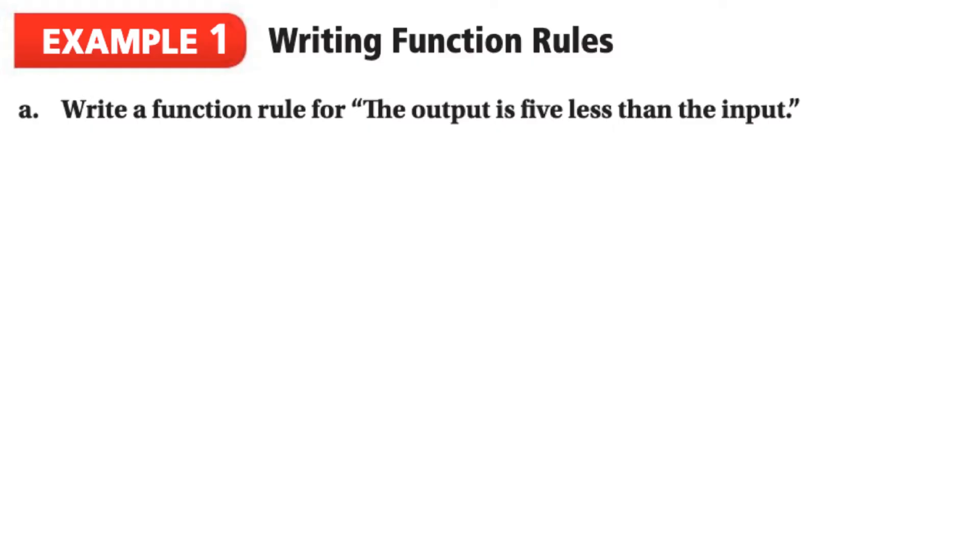In our first example we're going to take a look at a function rule written in words and represent it as an equation. The first question says write a function rule for the output is 5 less than the input. We can translate this word sentence by remembering that the output is Y and the input is X. So this output is Y, the word is means equal, 5 less than means we are subtracting 5 from the input and the input is X. So we have the rule Y is equal to X minus 5.